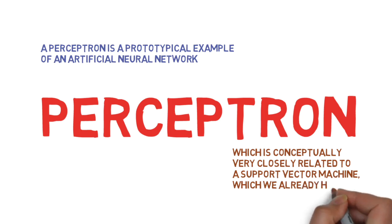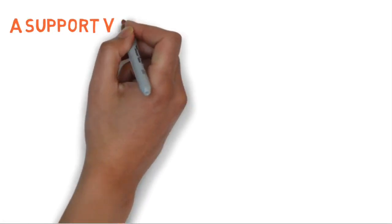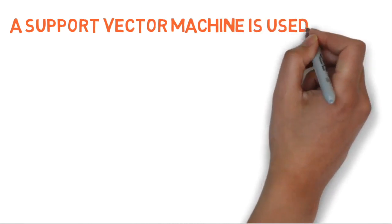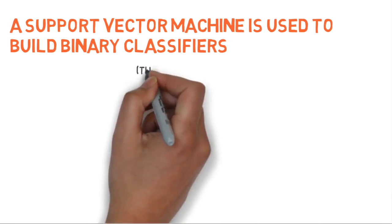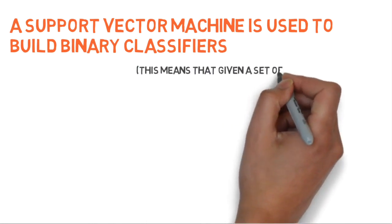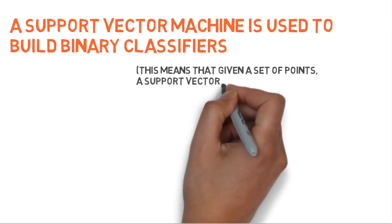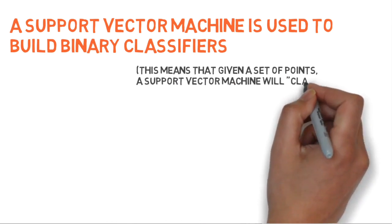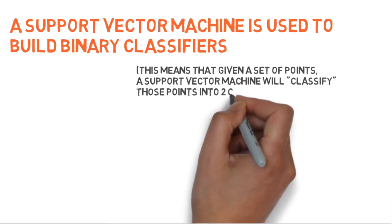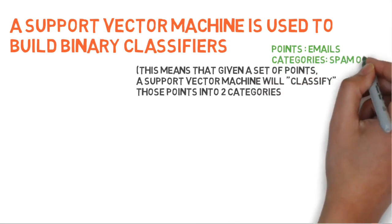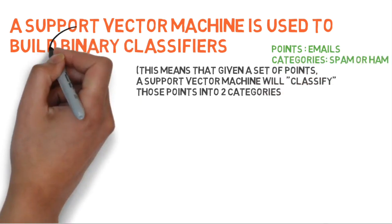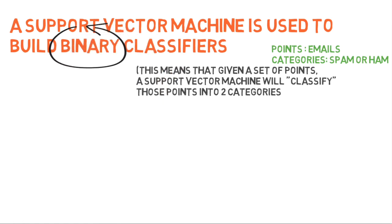Let's remind ourselves of what is involved in the support vector machine's approach. A support vector machine is used to build binary classifiers. So given a set of points, the support vector machine would separate those points into two categories. So it works really well with a problem like spam detection, where you want to separate emails into spam or ham. The key thing here is the word binary.